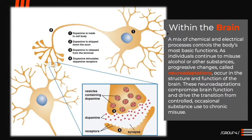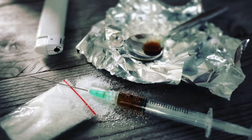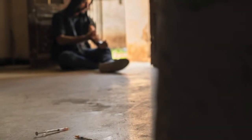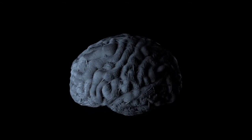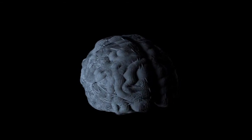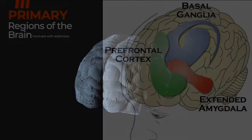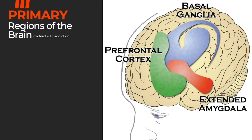As individuals continue to misuse alcohol or other substances, progressive changes, called neuroadaptations, occur in the brain structure and function. These neuroadaptations compromise brain function and drive the transition from controlled, occasional substance use to chronic misuse. These brain changes endure long after an individual stops using substances and may produce continued periodic craving for the substance that can then lead to relapse. The critical regions involved in the development and persistence of substance use disorders are the basal ganglia, the extended amygdala, and the prefrontal cortex.